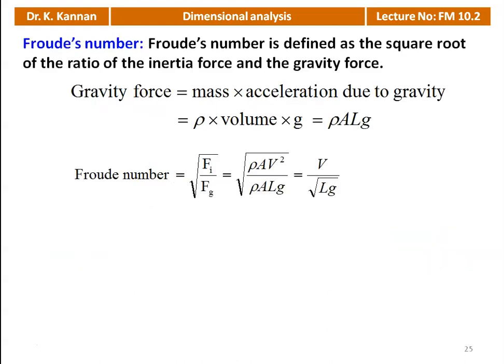The Froude number is defined as the square root of the ratio of inertia force to gravity force. Gravity force = ρ × volume × g = ρALg. Therefore, Froude number Fr = √(ρAV²/ρALg) = V/√(Lg).